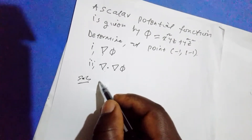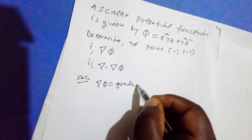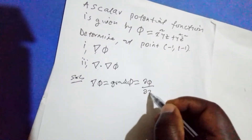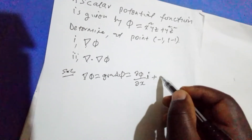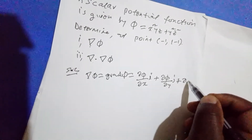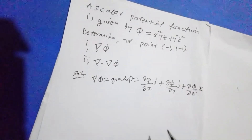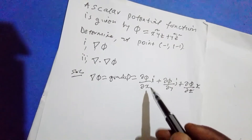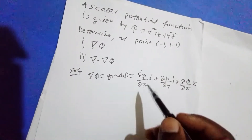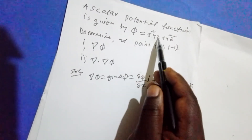Solution. We know that the gradient of the function equals the sum of its partial derivative components. So we need to calculate the partial derivative of the function with respect to x, then with respect to y, and also with respect to z.